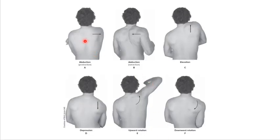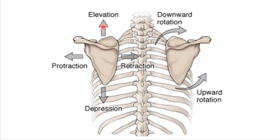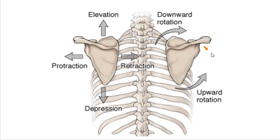For every arm movement, you're going to get scapular abduction or protraction, retraction, elevation, depression, upward rotation, or downward rotation. This is all movement of the scapulothoracic joint — remember, that's not a true joint, it's just the scapula moving. We can observe the scapula moving on the ribcage in elevation, depression, protraction, retraction, and then downward rotation, where the glenoid fossa ends up pointing downwards, or upward rotation, where the glenoid fossa ends up pointing upwards.